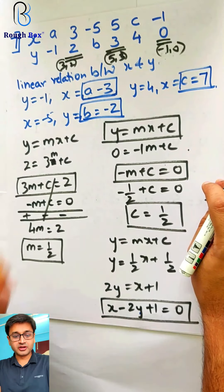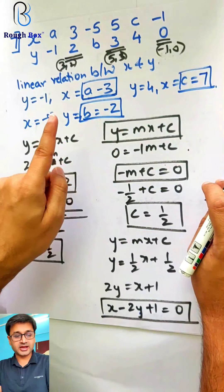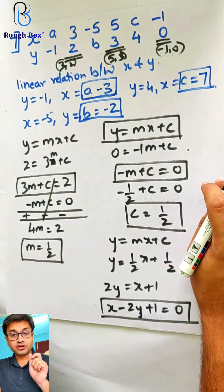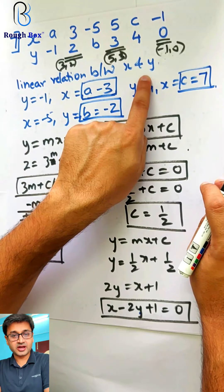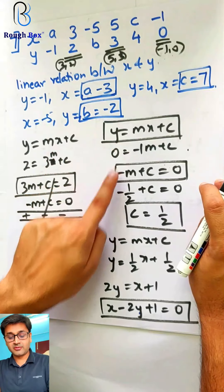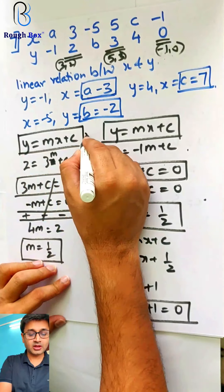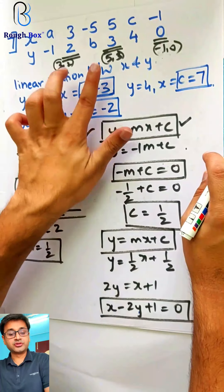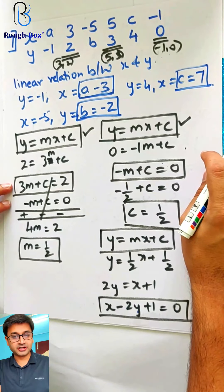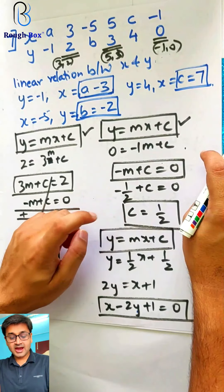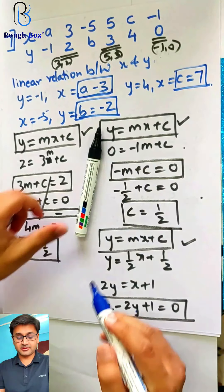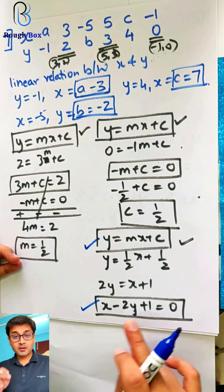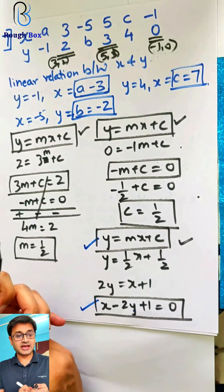Did you understand? So once again: first we plotted the points, got the line, used a, b, c and got their coordinates — that is sorted. Now the most important thing is the linear relation between x and y. Use y equals mx plus c two times with two known points to get two equations. Apply simultaneous equations to get m and c. Then substitute m and c back into y equals mx plus c to get the final equation. This is the most important question from an exam point of view.